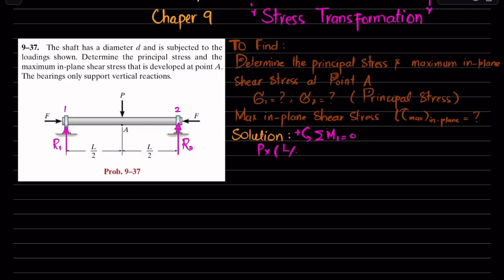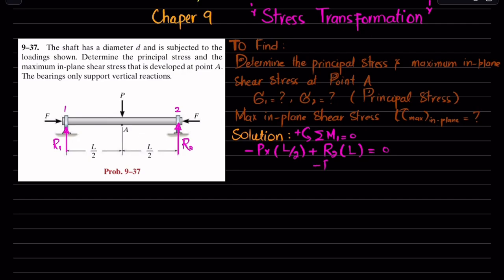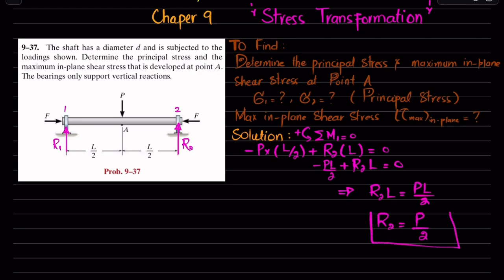So we write: minus P multiplied by L/2. The second moment is produced by R2 with perpendicular distance L (which is L/2 plus L/2), and that produces counterclockwise so it is positive. So: R2 into L is equal to 0. R1 is not producing a moment because it passes through point 1. From here: minus PL/2 plus R2 times L equals 0, giving R2 times L equals PL/2. Dividing both sides by L: R2 equals P divided by 2.